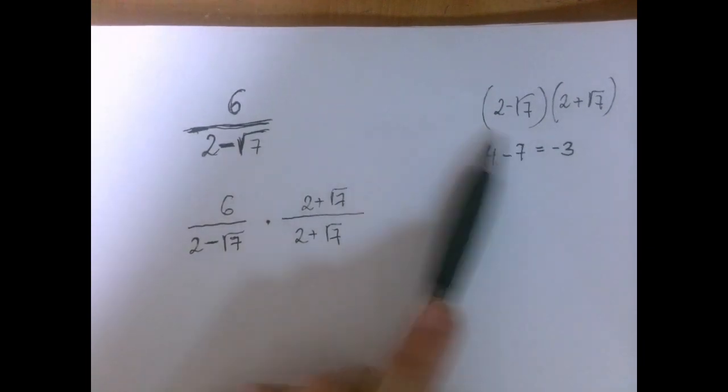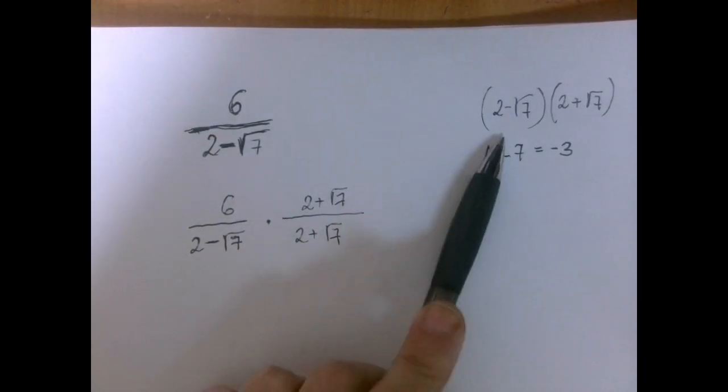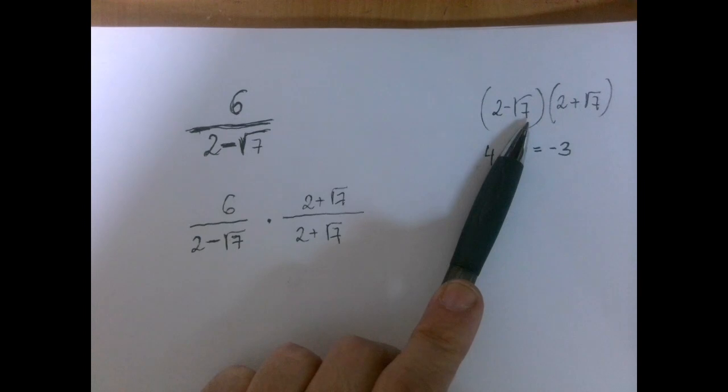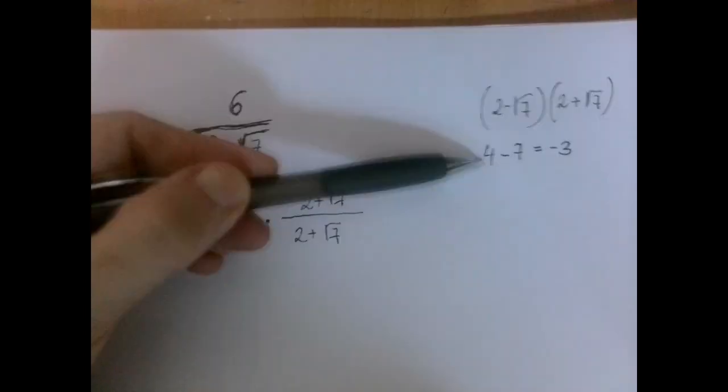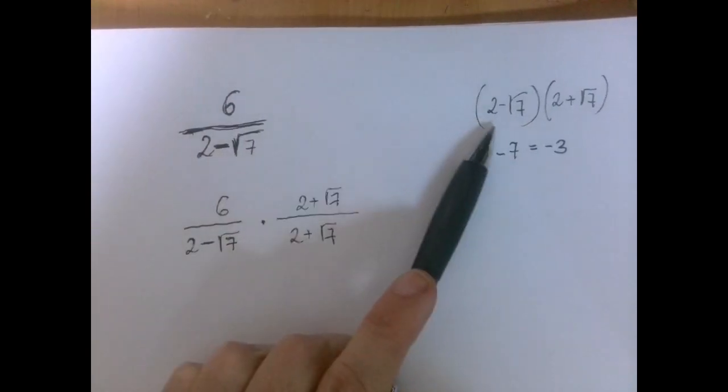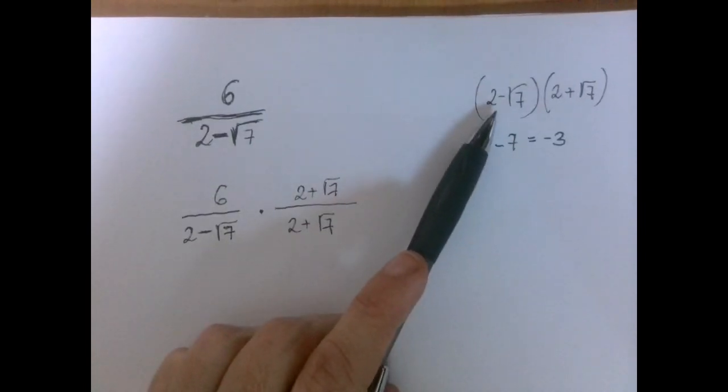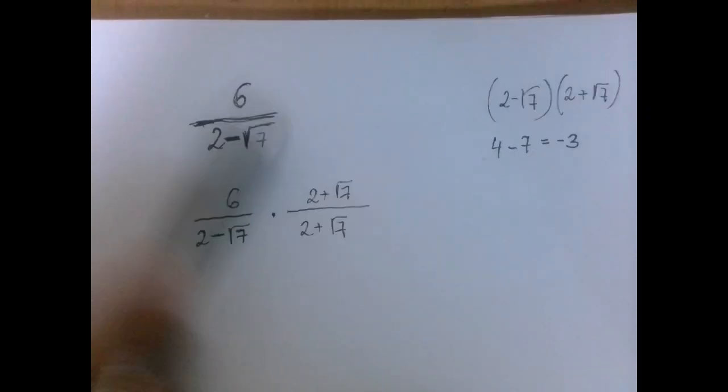So that means that this number should be negative, and that is indeed the case because 2 is the square root of 4, and the square root of 7 is the square root of 7. So this squares to 4, this squares to 7. And when we're subtracting a bigger positive number from a smaller positive number, then we do get a negative number. So this number is negative.